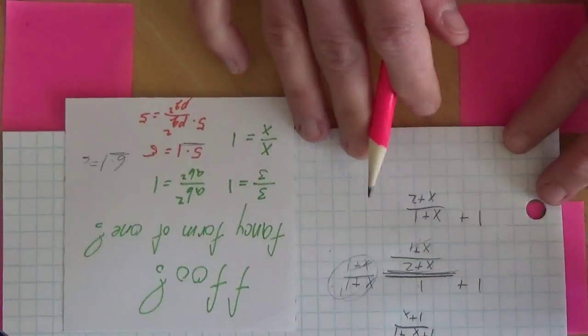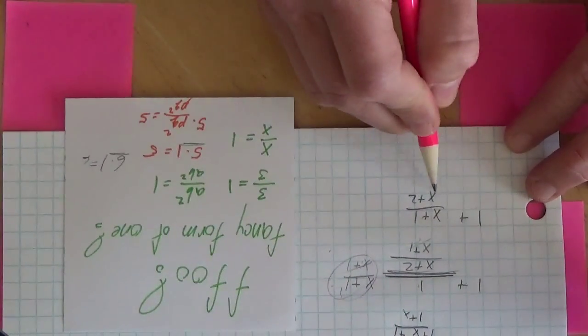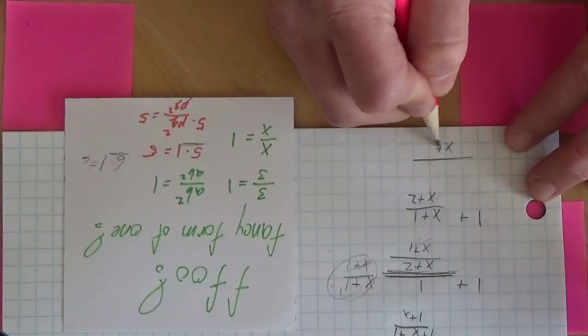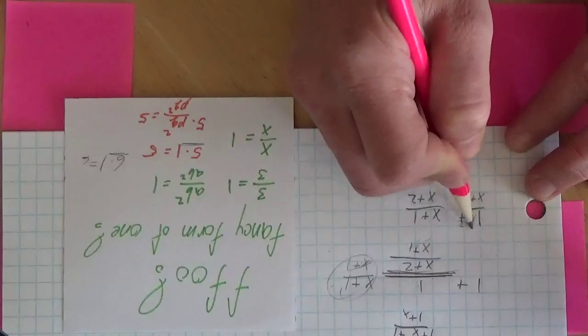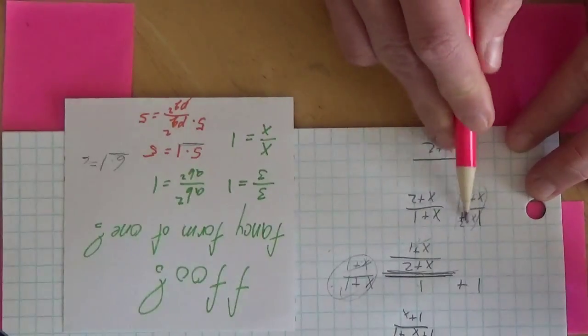So, we got that, and now we have to do it again. So I need a common denominator of x plus 2. So this guy's going to need an x plus 2, and so I'll need to multiply the top by an x plus 2 as well. Fancy form of 1.